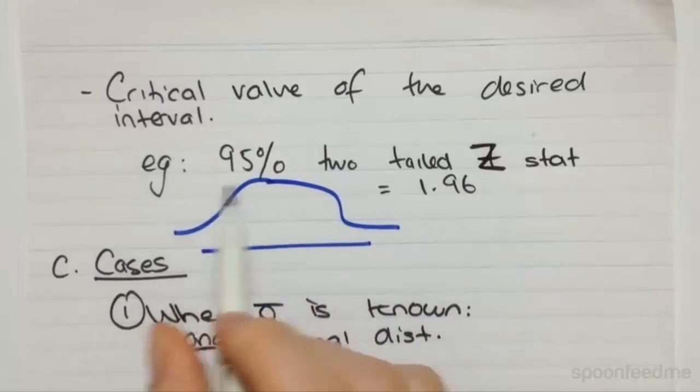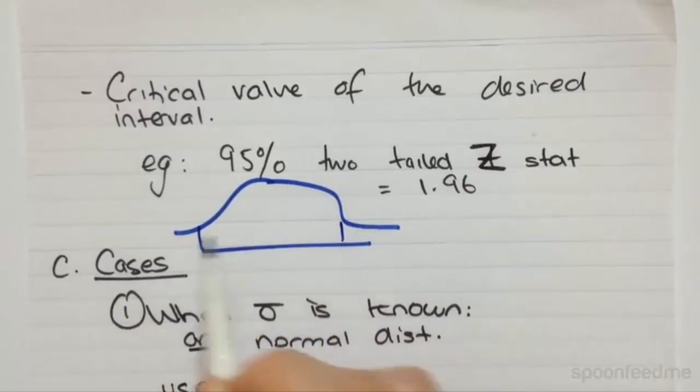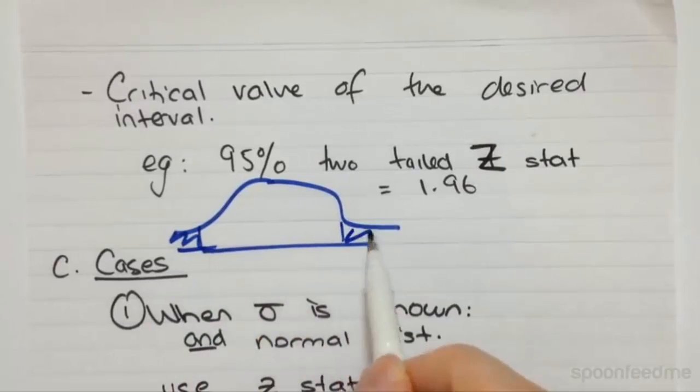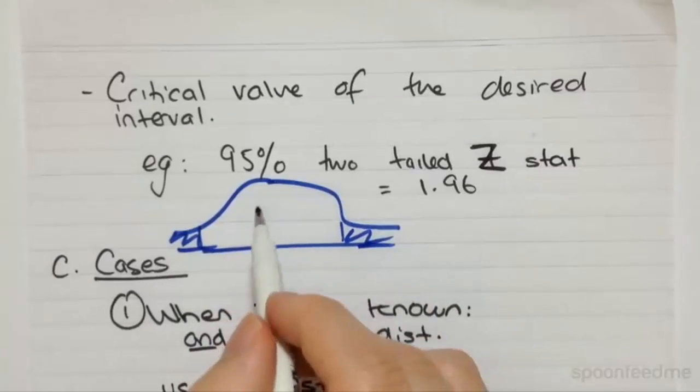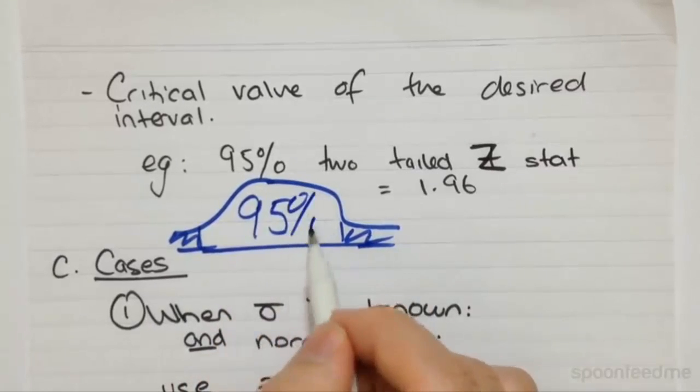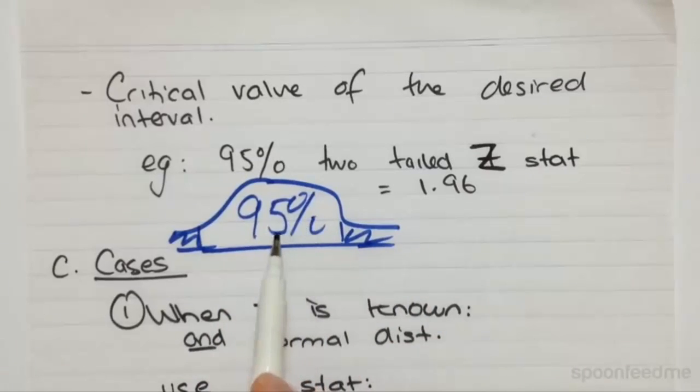So essentially, the 95% Z statistic will leave 2.5% in each of the tails, leaving with the total confidence area of 95%. So it's trying to capture 95% of the data points or 95% of the potential values for the population mean to be more accurate.